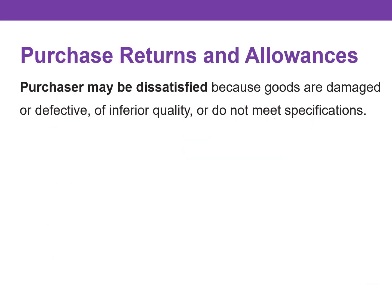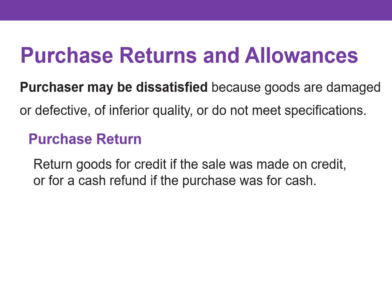A purchaser may be dissatisfied with the merchandise received because the goods are damaged or defective, possibly of inferior quality, or simply do not meet the purchaser's specifications. In such cases, the purchaser may return the goods to the seller for credit if the sale was made on credit, or for a cash refund if the purchase was for cash. This transaction is known as a purchase return. We purchase something, get home, decide we no longer want it, so we return it.